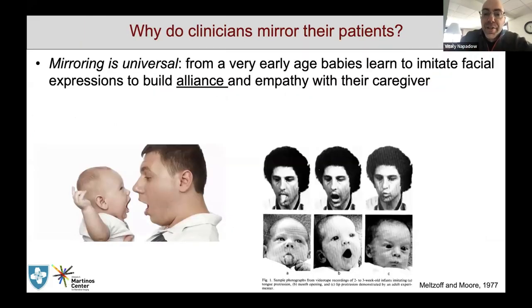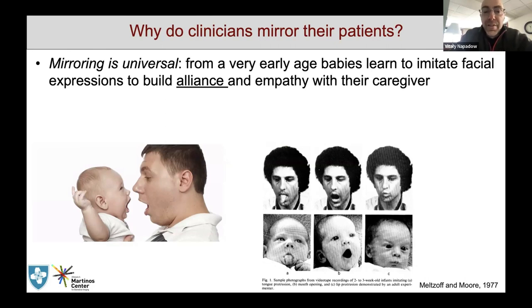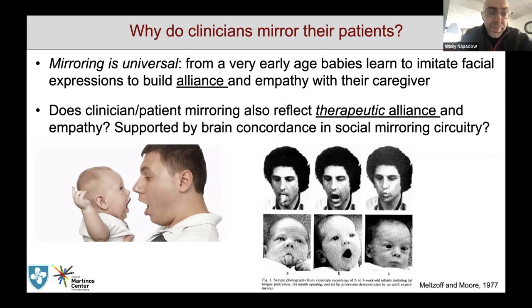So why do clinicians mirror their patients? Mirroring is universal from a very early age. Babies learn to imitate facial expressions to build alliance and empathy with their caregiver — this is a very important part of human development. Babies need the care of a caregiver, and part of the way they bond is by mirroring facial expressions, which is very much built into our psyche as humans. The question then is: does clinician-patient mirroring reflect therapeutic alliance and empathy, and is it supported by brain concordance and social mirroring circuitry?